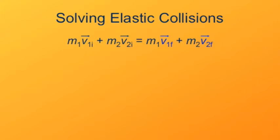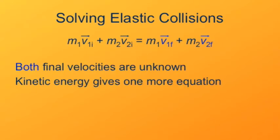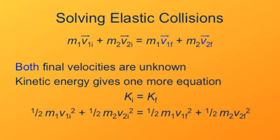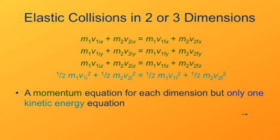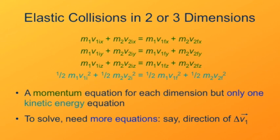The final velocities of the two objects after an elastic collision are both unknown, but conservation of kinetic energy gives us one more equation to solve for them. This works fine for motion along one dimension. However, in two and three dimensions we run into a problem: momentum gives us a separate equation for each dimension, but in an elastic collision we have two unknowns in each dimension — the velocity component of the first particle and the velocity component of the second particle. Conservation of energy gives only one more equation since energy is not a vector. So in two and three dimensions we don't have enough equations; we need additional information such as the direction of one of the final velocities.